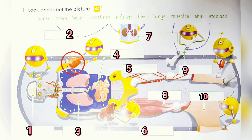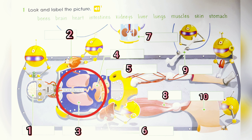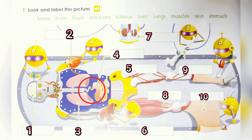Number two: What's this? It's the heart. Number three — there is more than one, so the question is: What are these? These are the lungs.